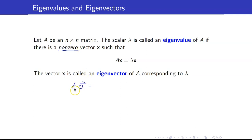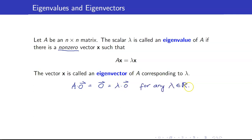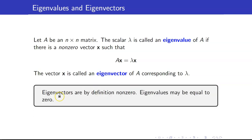Why must x be non-zero? If x is equal to the zero vector, A times the zero vector is the zero vector, and this is equal to lambda times the zero vector for any real number lambda. Then it doesn't make sense to talk about eigenvalues because all real numbers would be an eigenvalue. Eigenvectors are always non-zero. However, eigenvalues may be equal to zero.